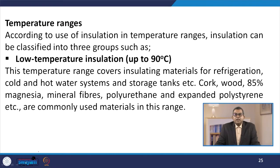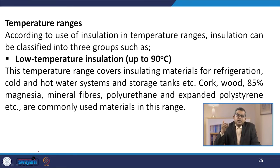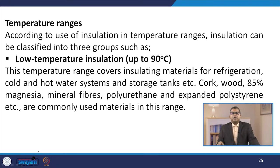Let us talk about temperature ranges. According to use, insulation can be classified into three different groups. Low temperature insulation is up to 90°C, covering insulating materials for refrigeration, cold and hot water systems, and storage tanks. Commonly used materials in this range include cork, wood, 85% magnesia, mineral fibres, polyurethane, and expanded polystyrene.